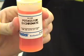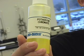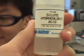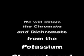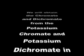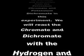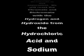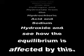During this experiment, we used the following materials: potassium dichromate, potassium chromate, sodium hydroxide, and dilute hydrochloric acid. We will obtain the chromate and dichromate from the potassium chromate and potassium dichromate. We will react the chromate and dichromate with the hydrogen and hydroxide from the hydrochloric acid and sodium hydroxide, and see how the equilibrium is affected by this.